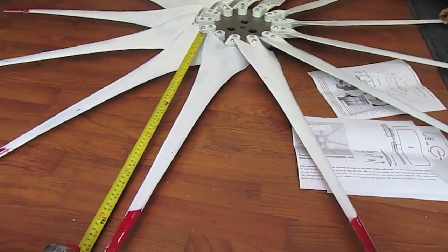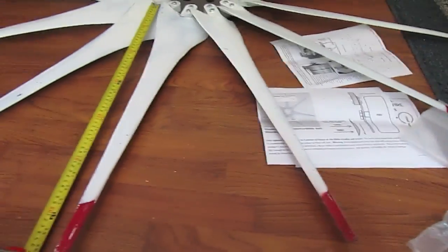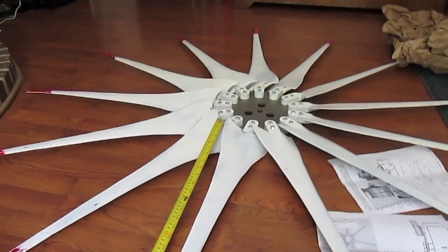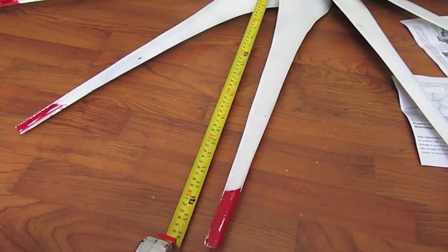Okay, so we've got all the blades on there now, torqued down to five foot-pounds. As you can see, it's a pretty good size. I've got the ruler laid out here.